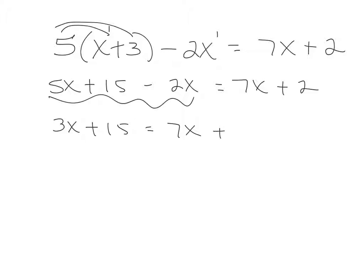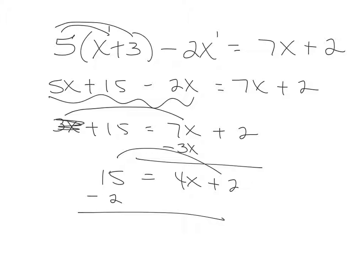and then you move things to each side of the equal sign. So like if I pick this 3x up and moved it, it became a minus 3x, gone over here. Then if I pick this 2 up and move it, it became a minus 2,